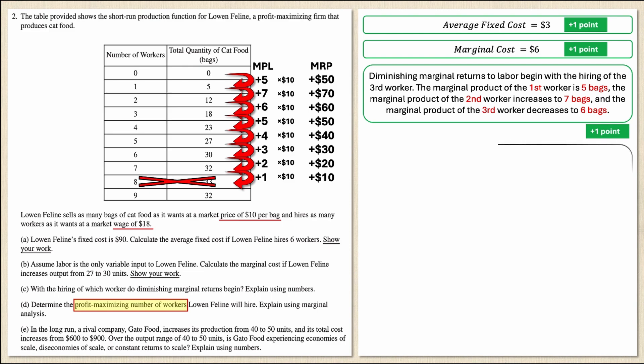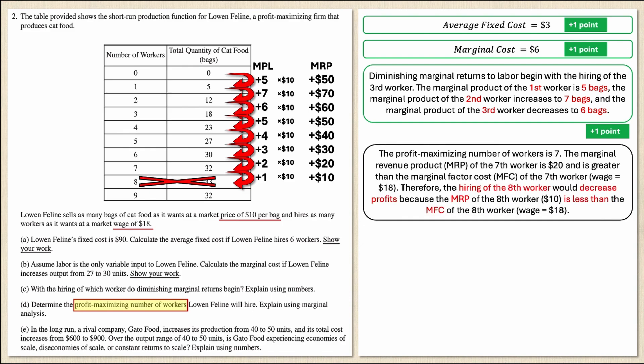The profit-maximizing number of workers is seven. The MRP of the seventh worker is $20, which is greater than the marginal factor cost (MFC) of $18. Hiring the eighth worker would decrease profits because the MRP of the eighth worker is $10, which is less than the MFC of $18. If you explained it using marginal analysis along these lines, that is your fourth point.